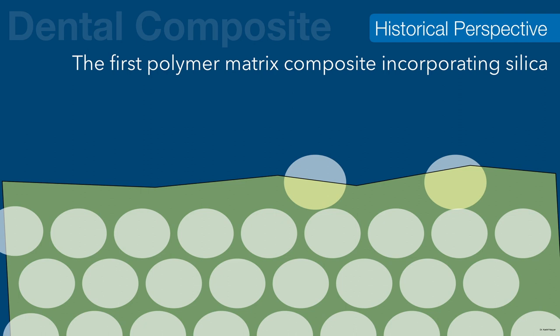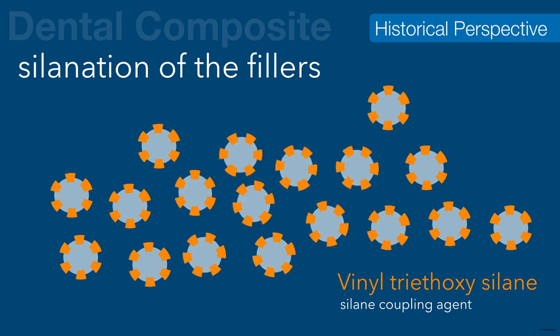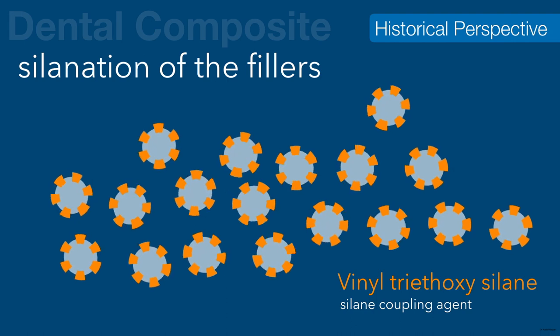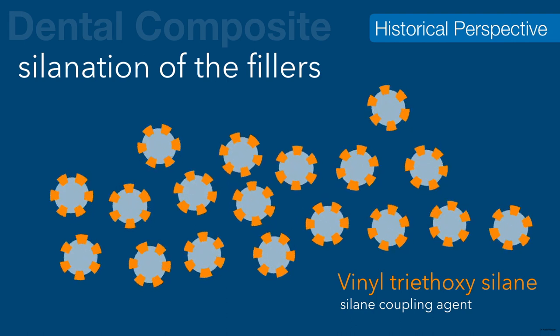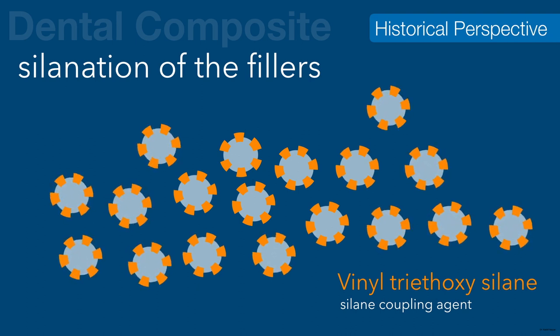To solve the bonding problem, the silane coupling agent was developed to keep the filler in the matrix and improve wear properties. The new improved formulation incorporated a coupling agent such as gamma-methacryloxypropyl trimethoxysilane. At one end it chemically bonds with the filler, and at the other end it chemically bonds with the resin matrix, thereby providing a chemical bond between the resin fillers and the resin matrix.